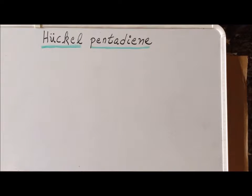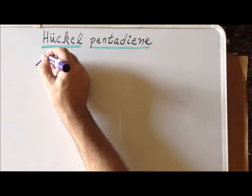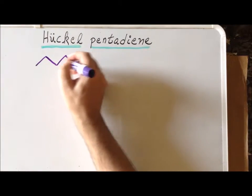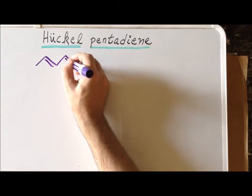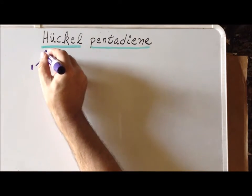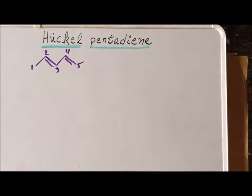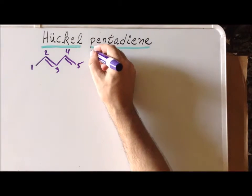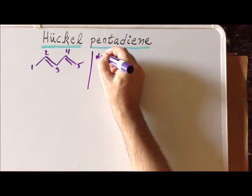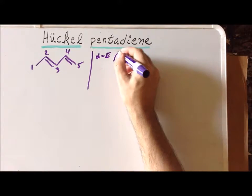In this video, we are going to derive the energies of the pi-conjugated system in linear pentadiene, which is a five-carbon chain. To find the energies, we have to solve an equation involving a secular determinant, which would have the following structure for linear pentadiene.